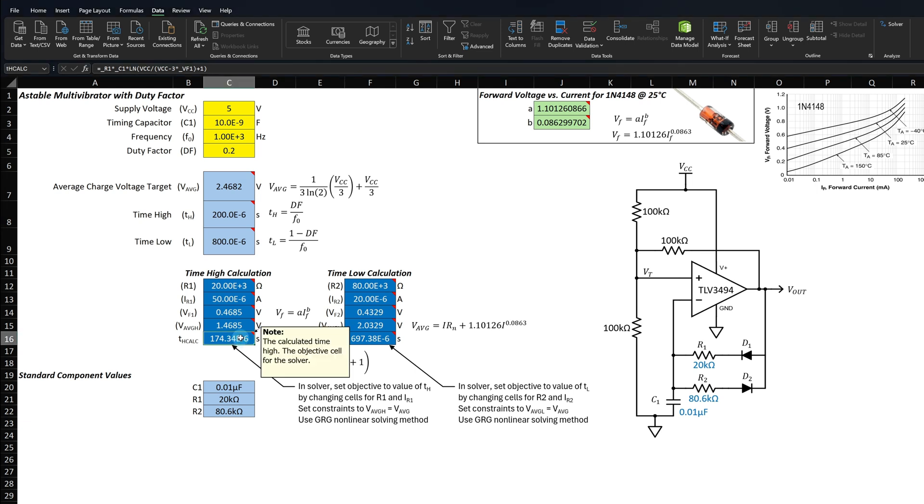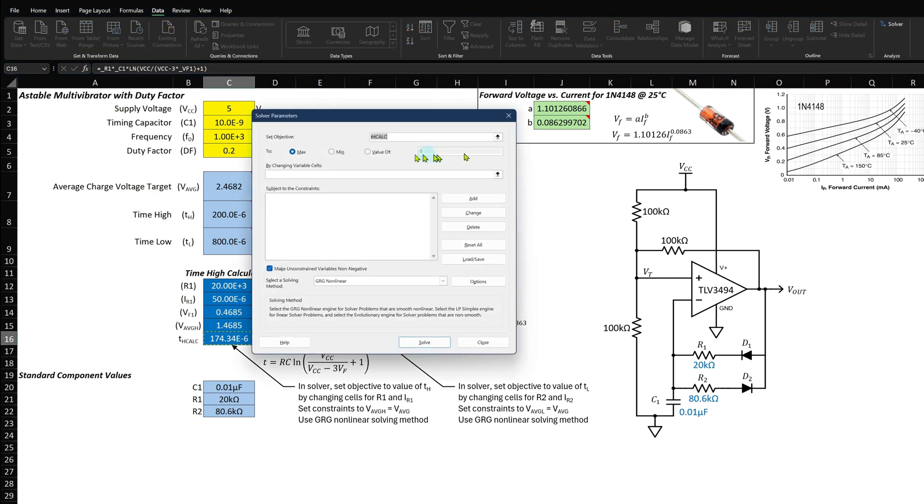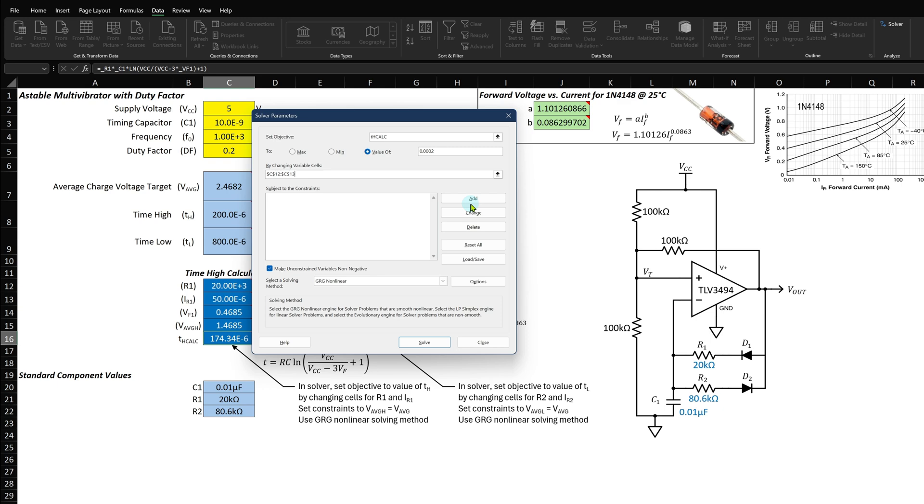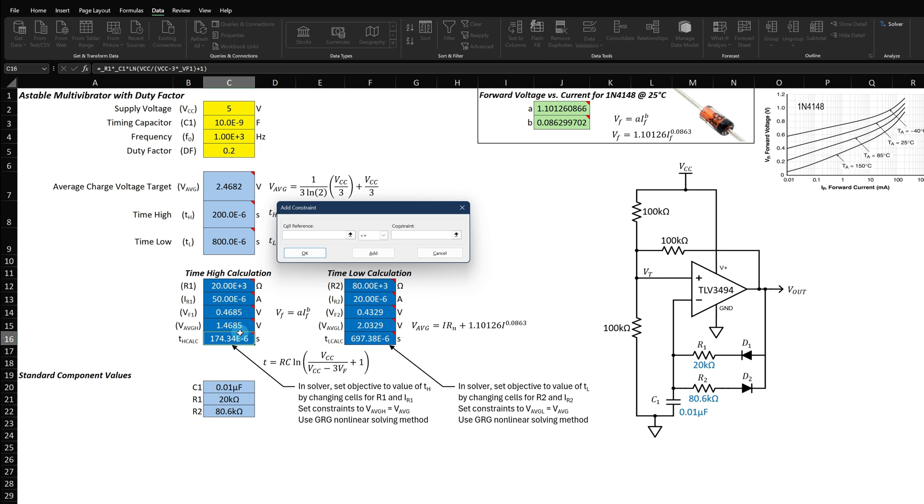Select the cell that's the object, which is the Time High Calc. Click the solver and you see that it already has the set objective as the TH Calc cell. We want the solver to give us a high time of 0.0002 seconds. We must manually type that in. We can't refer to a cell. Then we need to select the cells to change to get our desired result. In this case, we want the solver to adjust the cells for R1 and IR1.